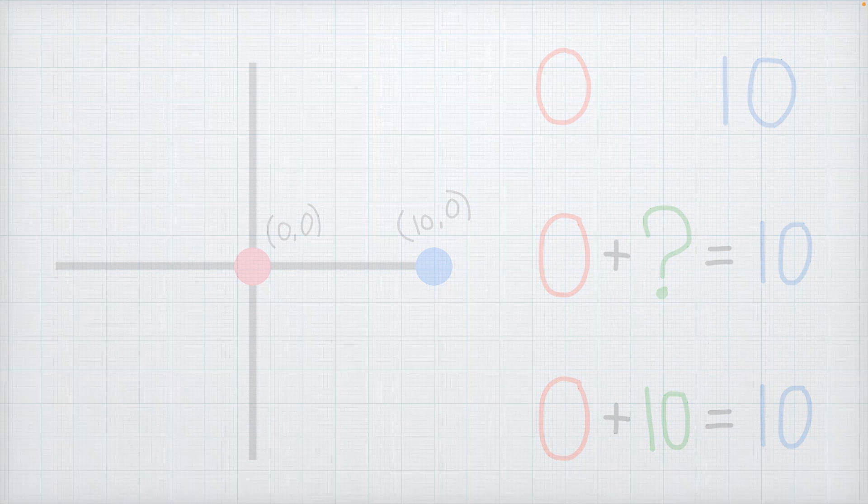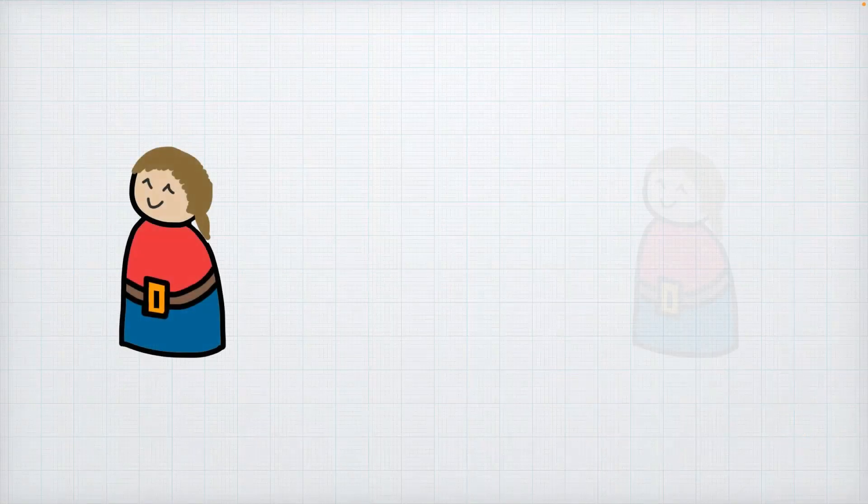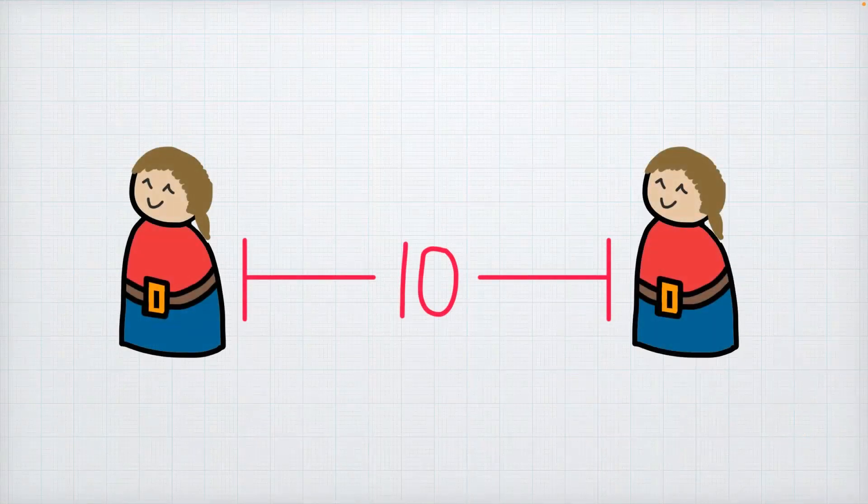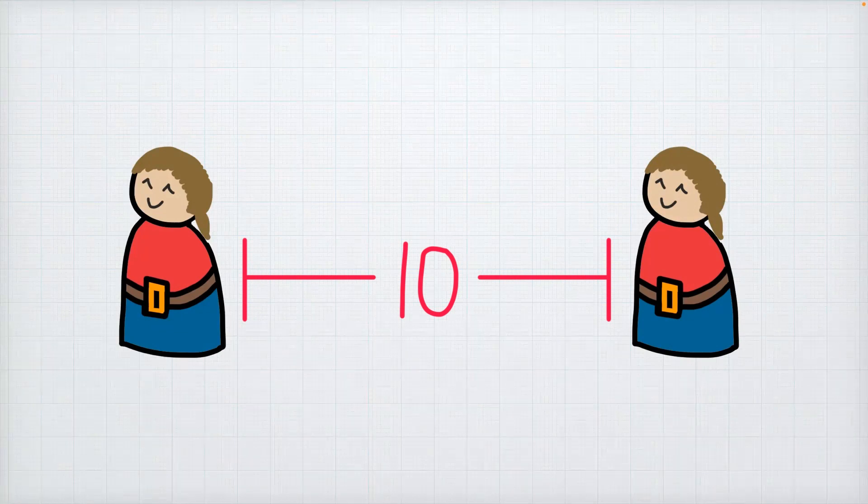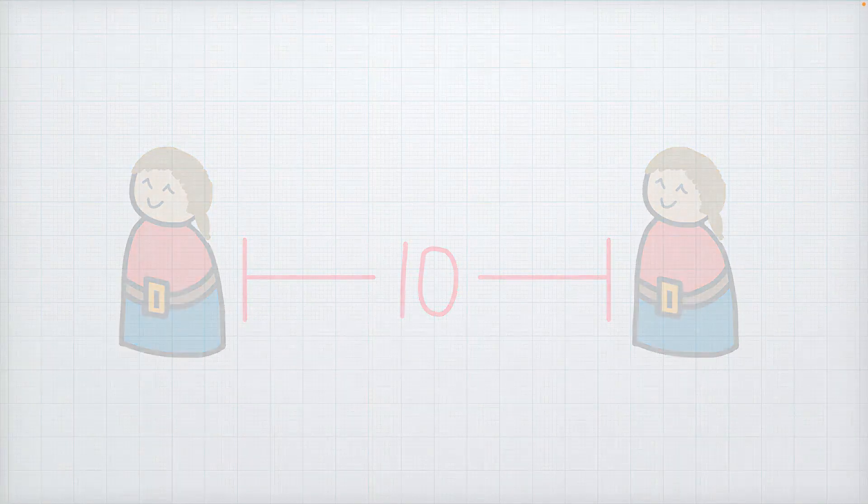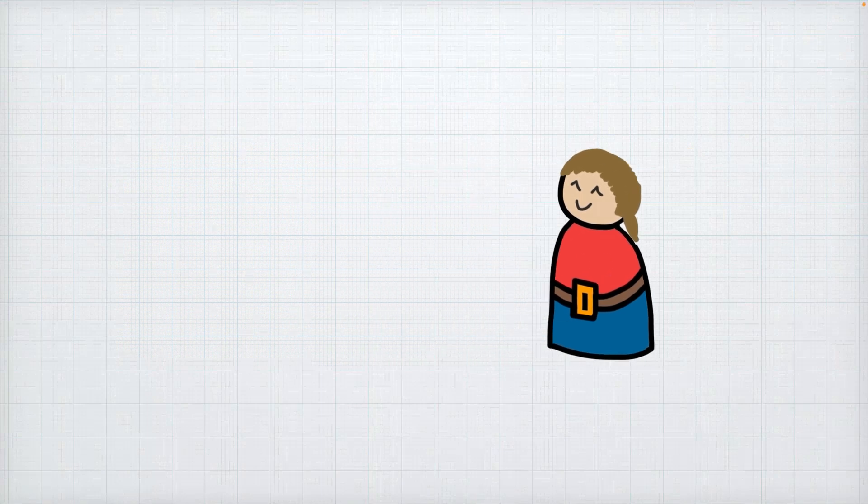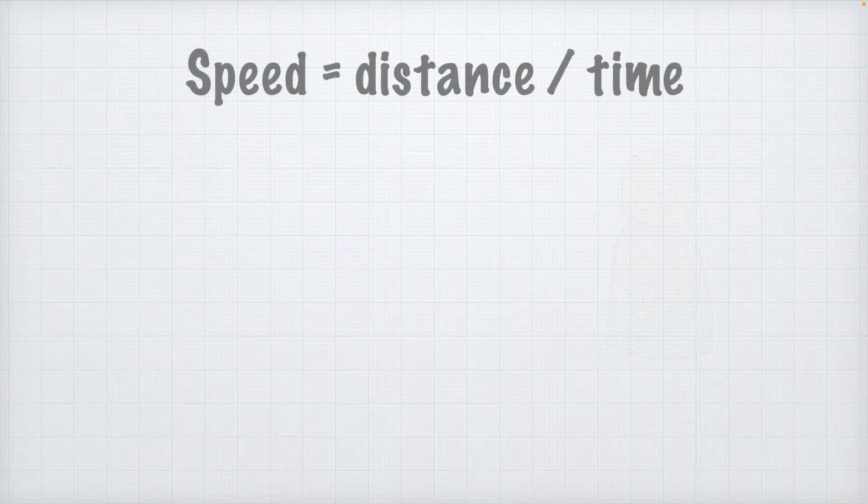If we implemented this in code right now Tom would teleport 10 units every time we press the right arrow key. And we don't want that. We want him to move gradually over time to this position. So to do that we'll need to give Tom a speed.